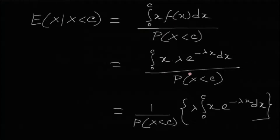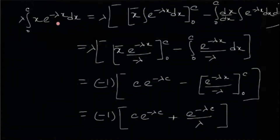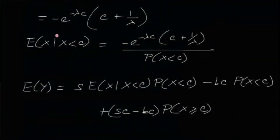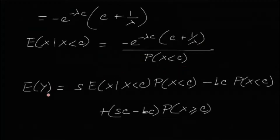After performing the integration — which is straightforward — the result is: negative e to the minus lambda C, multiplied by (C plus 1 by lambda), divided by P(X < C).